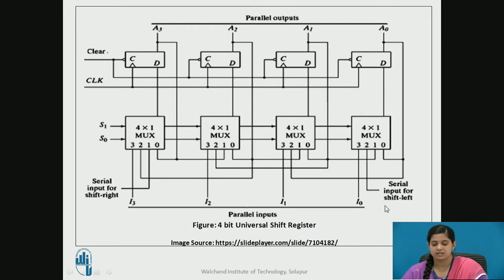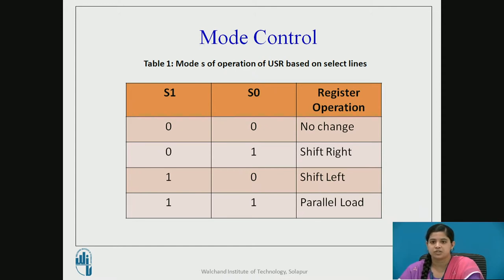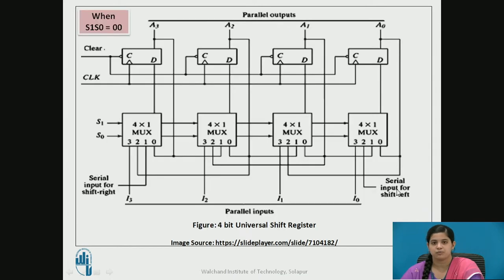Now let us see the different modes of operation according to select lines S0 and S1 — this is the mode control. If we give 00, there will be no change in the previous state output. If S1 is 0 and S0 is 1, it will be in shift right operation mode. If S1 is 1 and S0 is 0, the universal shift register will be in shift left operation. If both are 11, it will be parallel load operation.